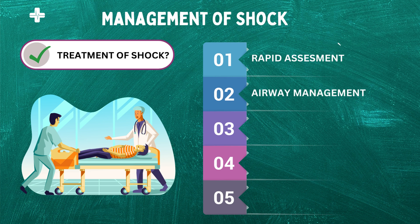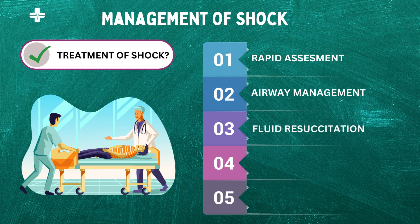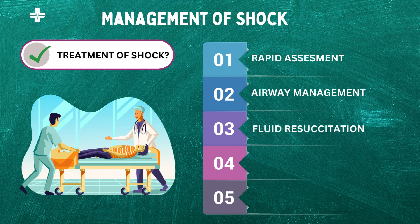Next, airway management: ensure that the patient's airway is open and maintain proper ventilation. Step 3, fluid resuscitation: patients with shock often require fluid resuscitation to increase blood pressure and restore blood volume. The type and amount of fluid administered depend on the cause of the shock.